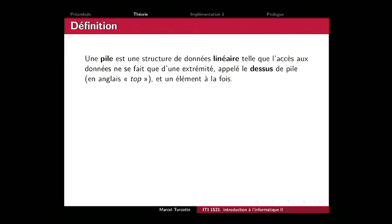Une structure de données qui est linéaire. Linéaire dans quel sens ? Dans le sens où, si on était en mesure de regarder à l'intérieur de la structure de données, on s'aperçoit que chacun des éléments a un élément en dessous de lui et un élément au-dessus — sauf si on est l'élément du dessous ou du dessus. La pile, c'est une structure de données qu'on peut accéder par une seule extrémité. Je ne peux pas accéder aux éléments qui sont aux positions intermédiaires ; je dois utiliser l'une des opérations disponibles.